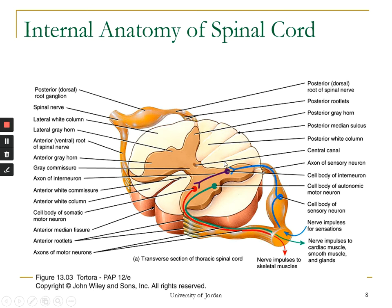Within the spinal cord segments are tracts — collections of axons in the central nervous system. In the peripheral nervous system, a collection of axons is called a nerve. A collection of cell bodies and dendrites in the peripheral nervous system is called a ganglion, while in the central nervous system it is called a nucleus.